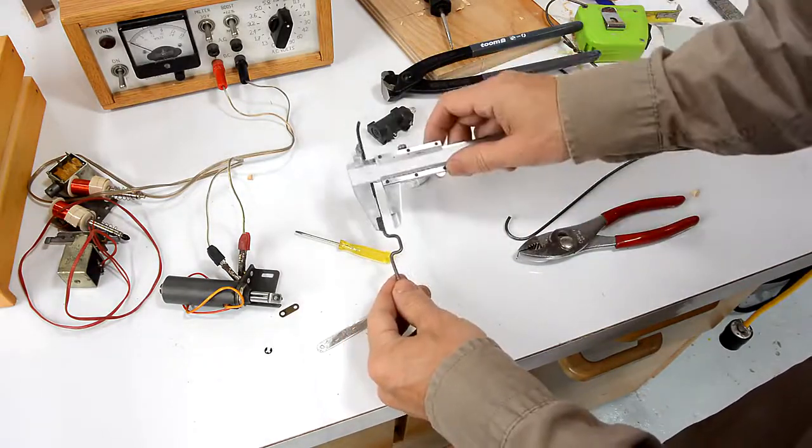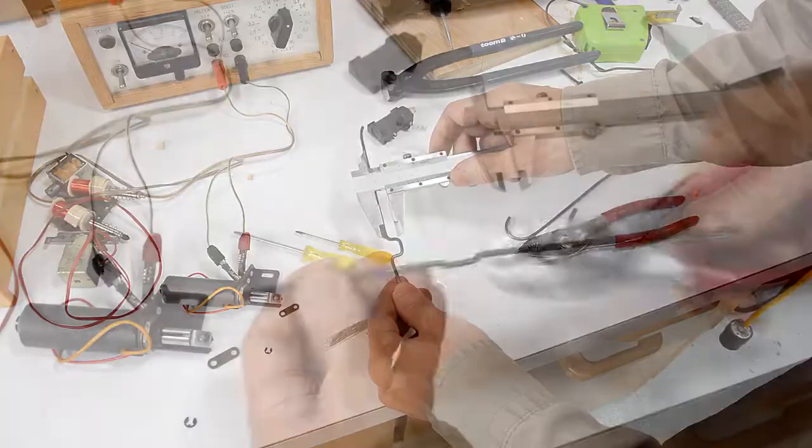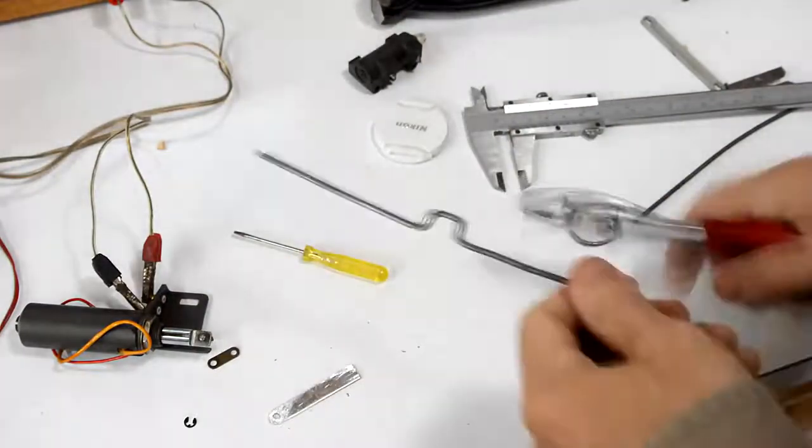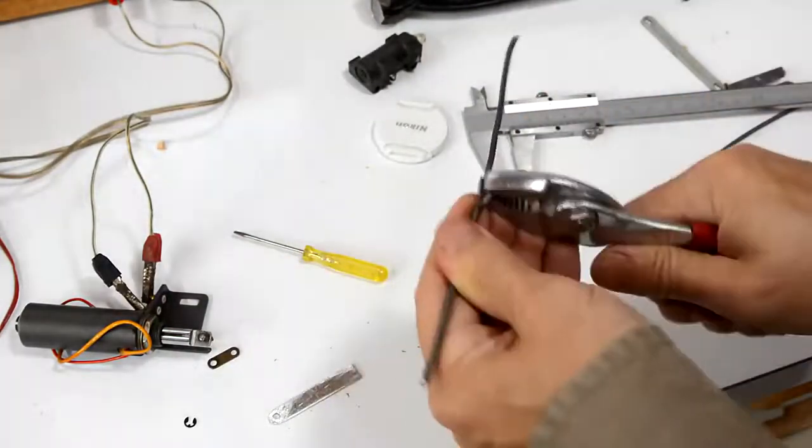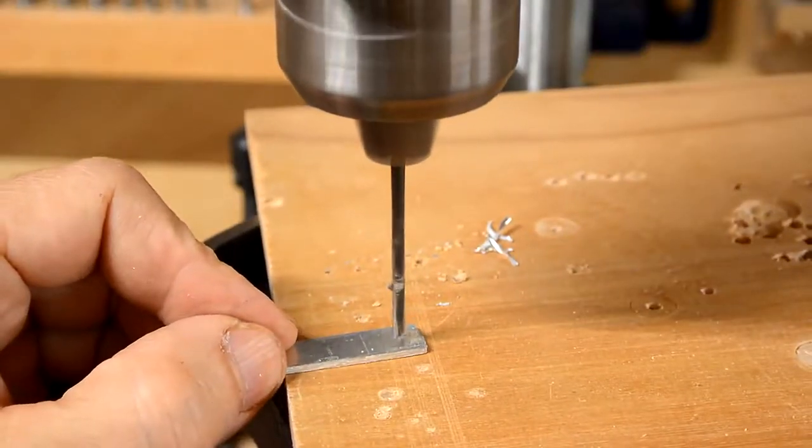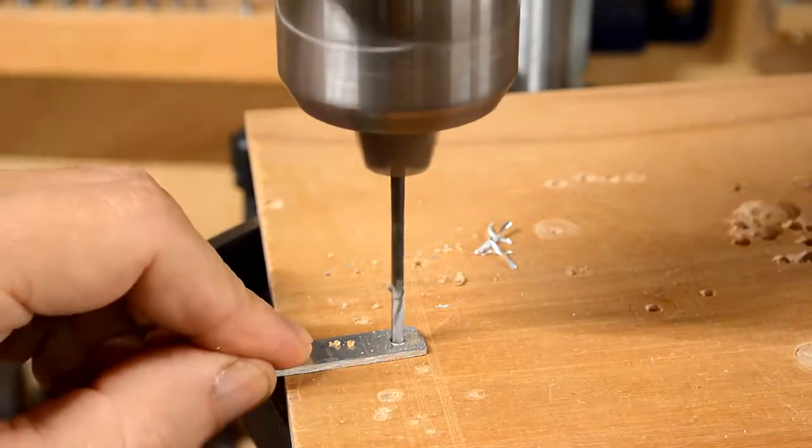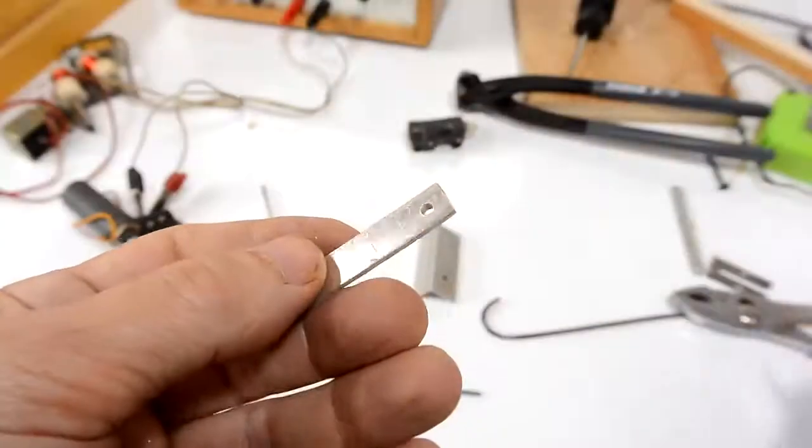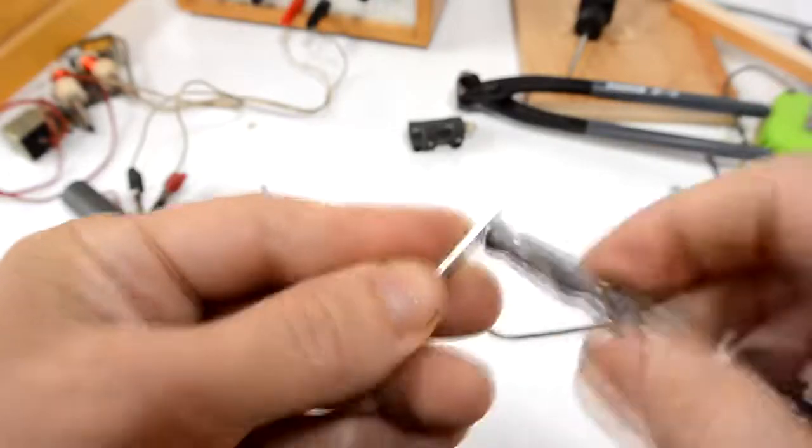Just need to straighten that out a bit. It's got about the right amount of throw to it. It's starting to look kind of straight. There's always a burr on the other side that I need to get rid of.